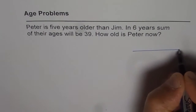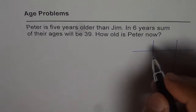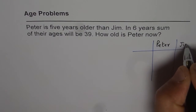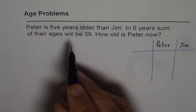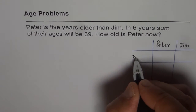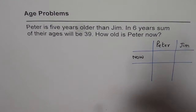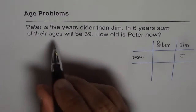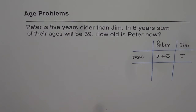We can make a reference table here with 2 columns — one for Peter and one for Jim. What we are given is that Peter is 5 years older than Jim. So if J is the number of years for Jim, then Peter is J plus 5, which makes him 5 years older than Jim.